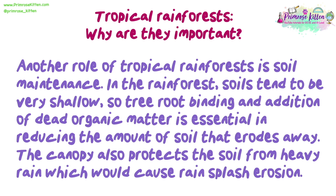Another role of tropical rainforests is soil maintenance. Soils in the rainforest tend to be very shallow, so tree root binding and the addition of dead organic matter is essential in reducing the amount of soil that erodes away. The canopy also protects the soil from heavy rain, which would otherwise cause rain splash erosion.